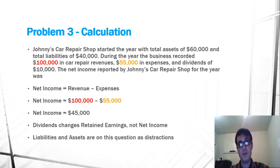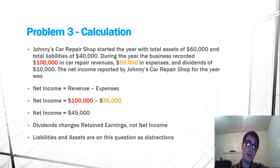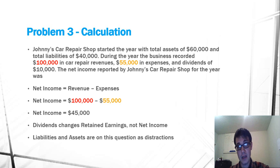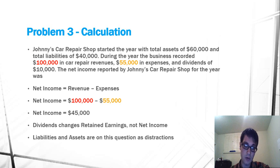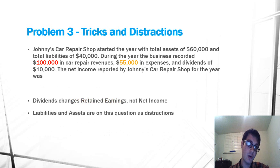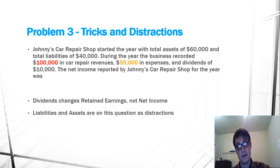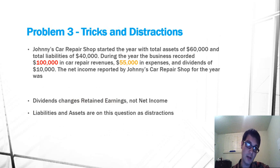Now what throws some people off in this problem are dividends, assets, and liabilities — these are all here as tricks. Dividends reduce retained earnings, but they don't affect net income. And liabilities and assets on this question are just here to trick you, as I show right here. Dividends just change retained earnings, lowering it, not net income. Liabilities and assets are just here to distract you from the answer.